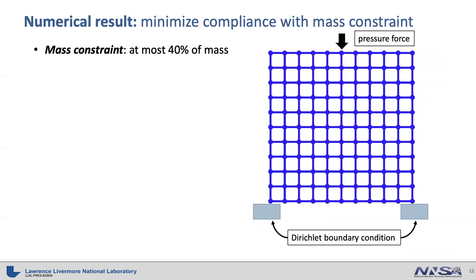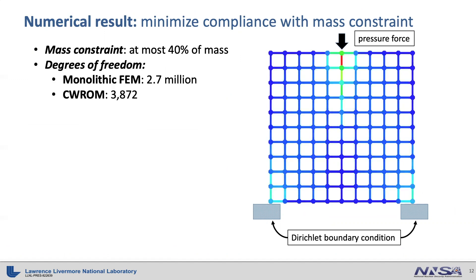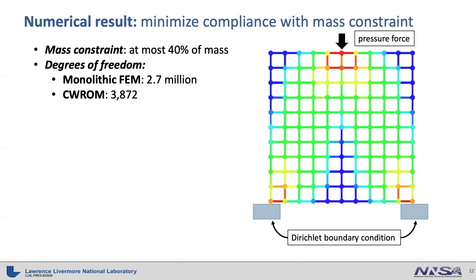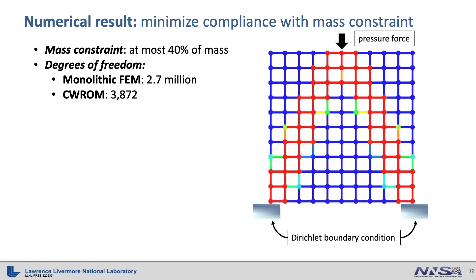Here is a numerical example for lattice structure design using component-wise reduced order model. Here, we minimize compliance imposing a constraint of mass being at most 40%. The downward pressure force is applied on the top middle port. Three-slip boundary conditions are imposed at the bottom corners. The full-order monolithic finite element solve involves 2.7 million degrees of freedom, while the CW ROM has only about 3,000 degrees of freedom.